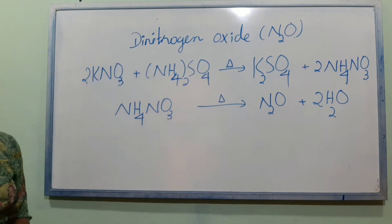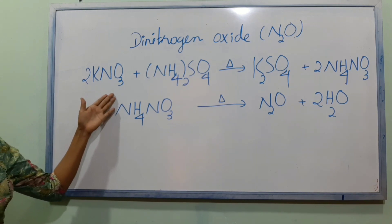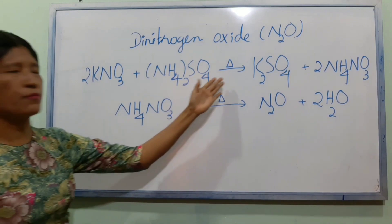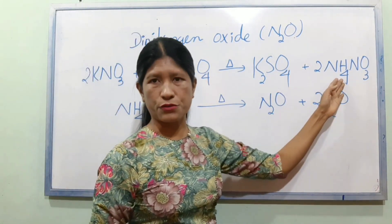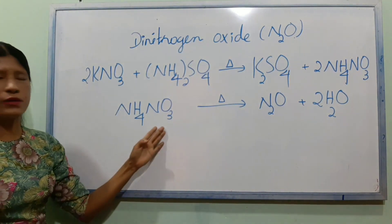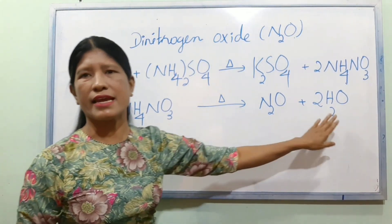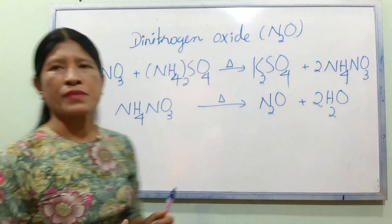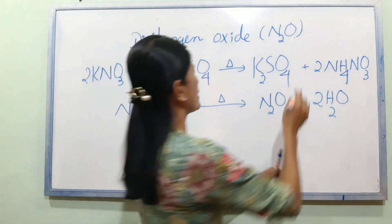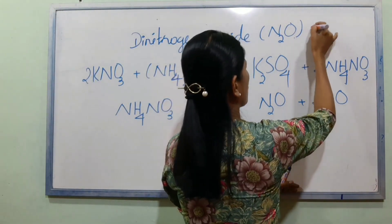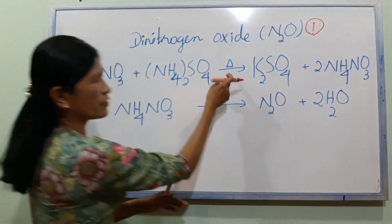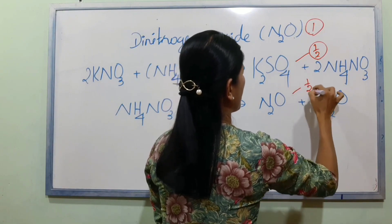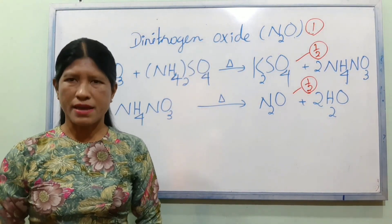The solution involves N2O. We have NH4NO3, which gives N2O and H2O. So the equation is: NH4NO3 → N2O + 2H2O.